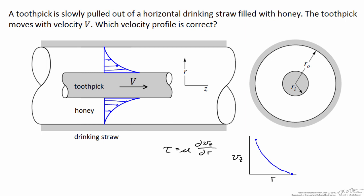Now what we need to do is rearrange this graph such that r is on the vertical axis and vz is on the horizontal axis. So by rearranging the graph, here is vz as a function of r.